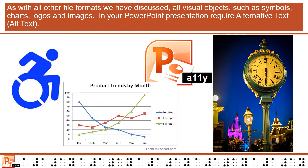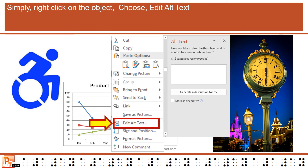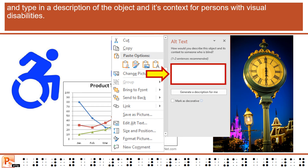As with all other file formats we have discussed, all visual objects — such as symbols, charts, logos, and images — in your PowerPoint presentation require alternative text, or alt text. Simply right-click on the object, choose Edit Alt Text, and type in a description of the object and its context for persons with visual disabilities.